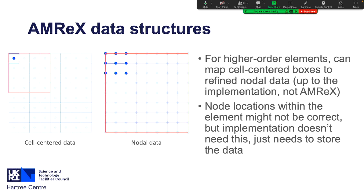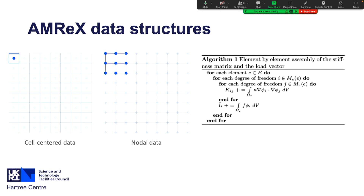That provides a place for us to store the data, though those locations within it aren't necessarily particularly meaningful — but as long as our implementation knows that, that's fine. On our cell-centered data structure, which is our control structure, we go through element by element, and on our nodal data structure we go through all of the different nodes — the different degrees of freedom — to assemble our matrices and force vectors.